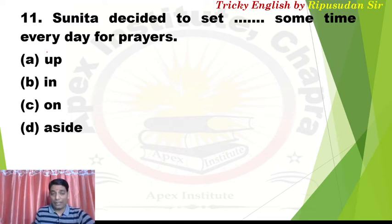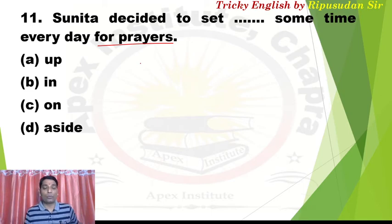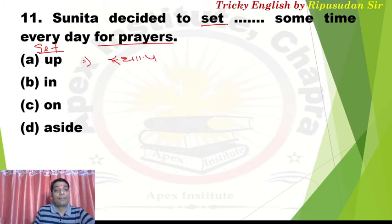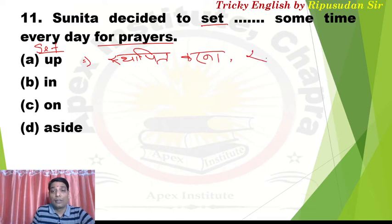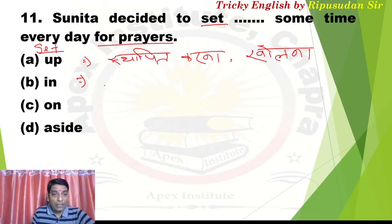Answer for Q10 is A — 'run short of'. Question 11: 'Sunita decided to set day sometime every day for prayers.' Sunita decided that she would give some time every day to prayers. 'Set up' means to establish or open — a school, college, coaching, shop, or plant. 'Set in' means to begin or commence — especially used when a season begins. For seasons starting, we use 'set in'.